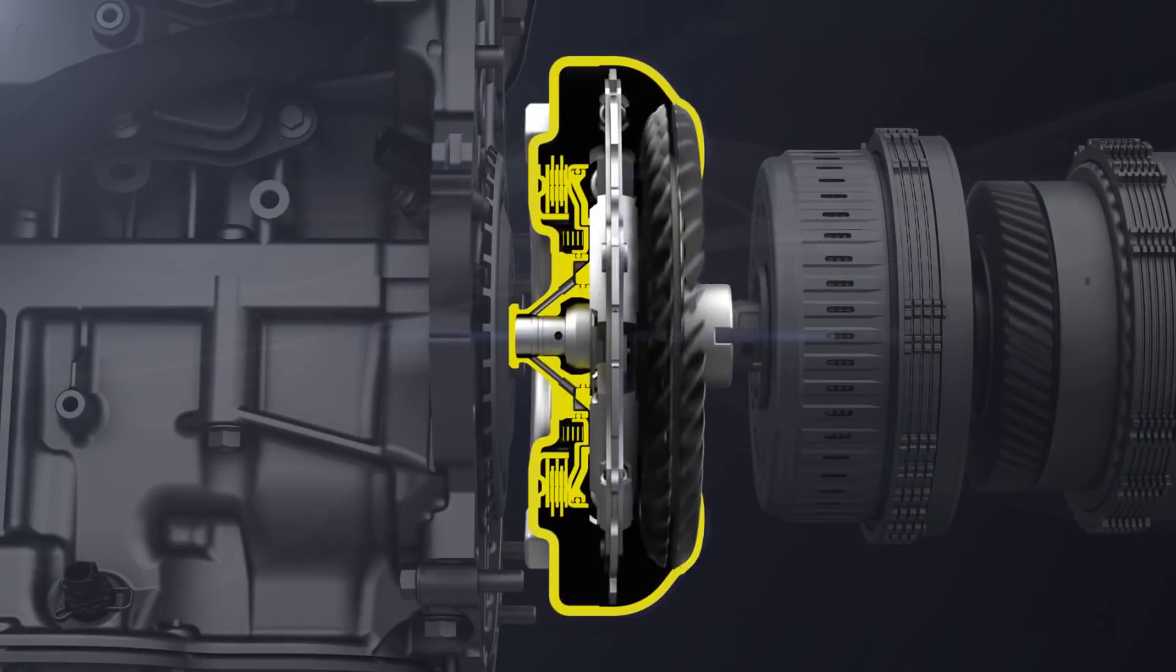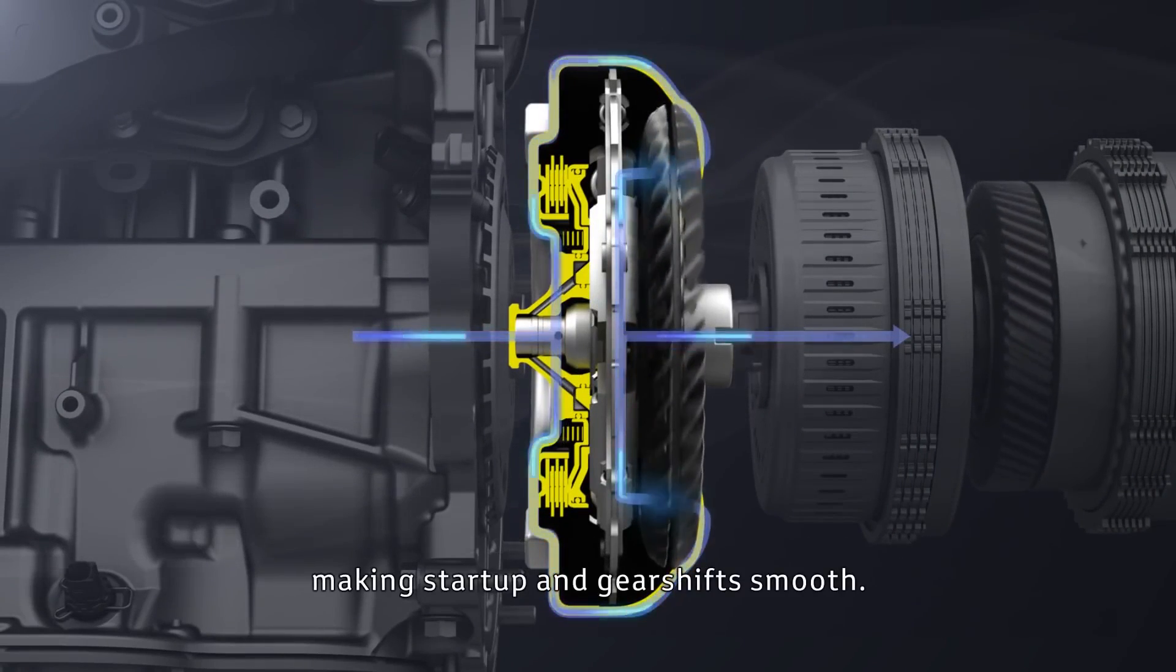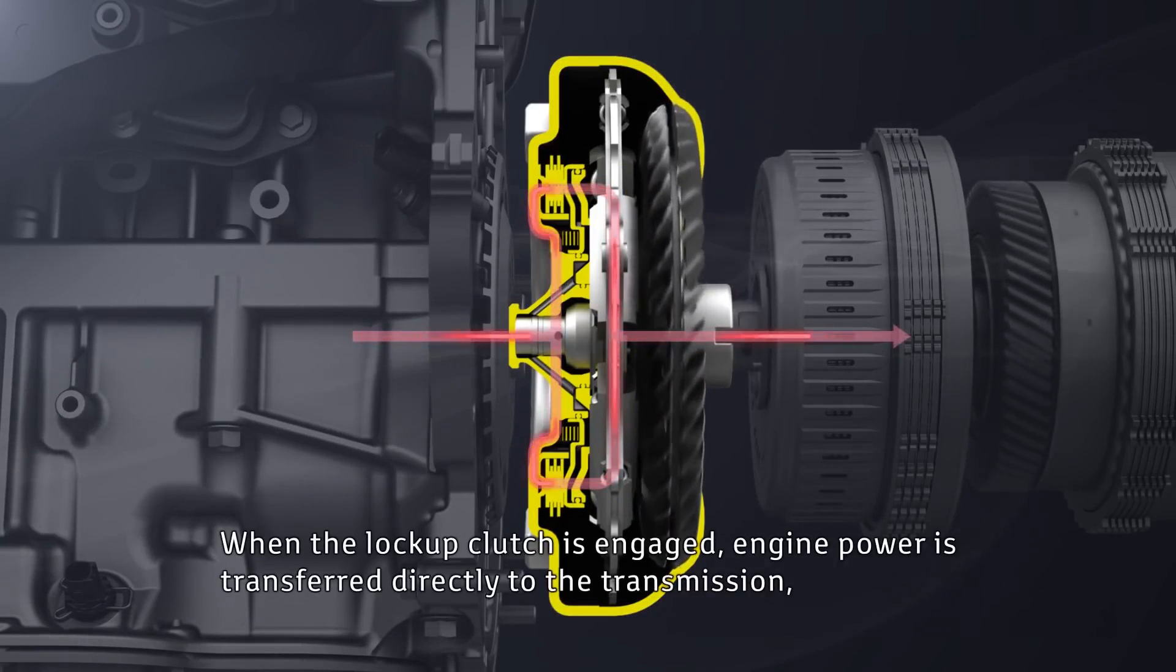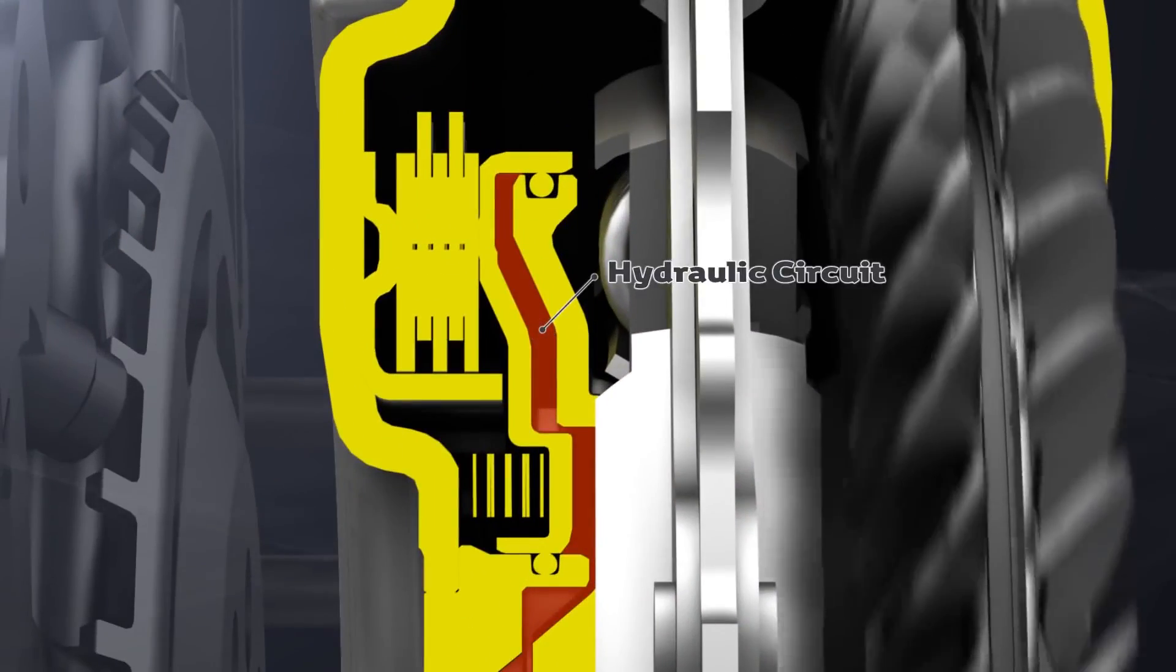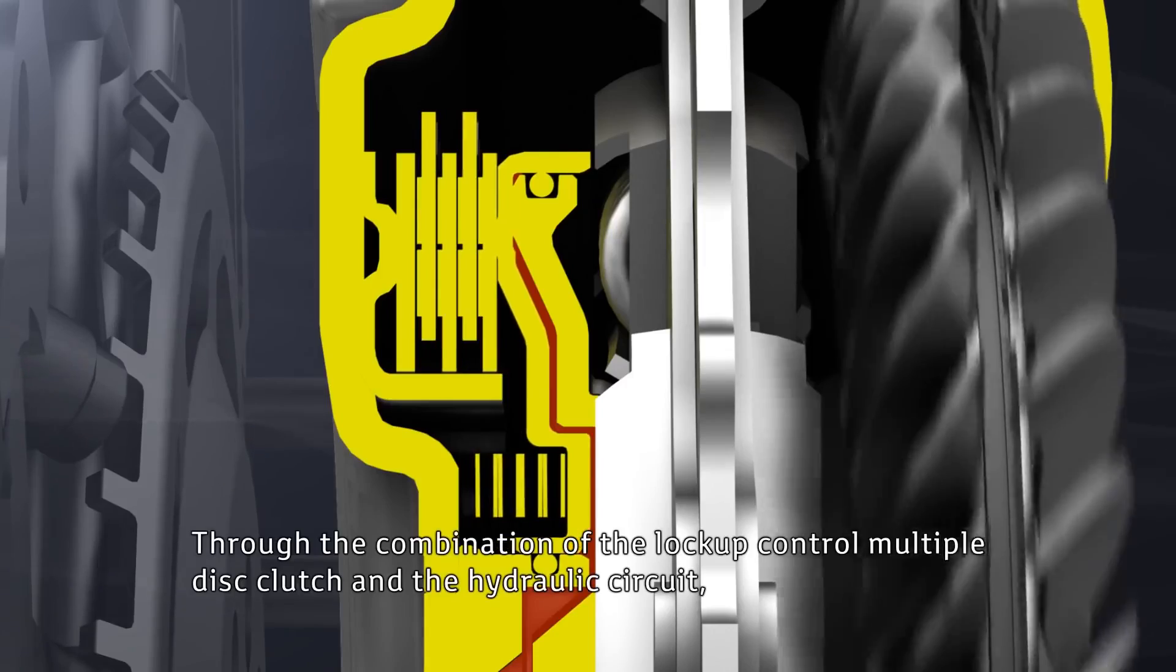Instead of two separate units, torque converter is a single unit. In simple terms, it basically has an impeller which is connected to the flywheel and a turbine which is connected to the input shaft of the transmission. There is a transmission fluid in them which, when the impeller rotates, the fluid rotates the turbine. This is how the power is transmitted from engine to the gearbox.